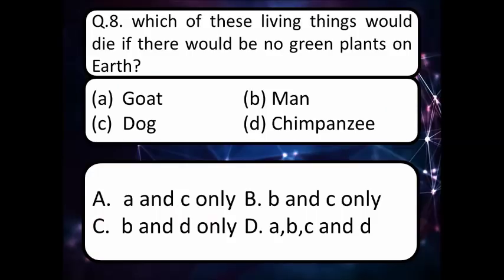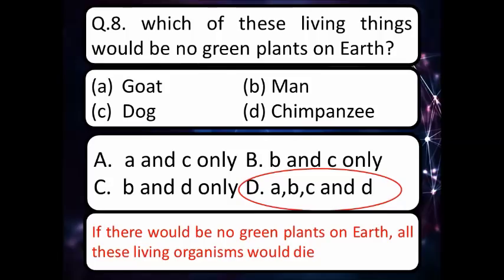Our next question is: which of these living things would die if there were no green plants on earth — goat, man, dog, or chimpanzee? Option A: A and C only. Option B: B and C only. Option C: B and D only. Option D: A, B, C, and D. The correct answer is option D — if there were no green plants on earth, all these living organisms would die.